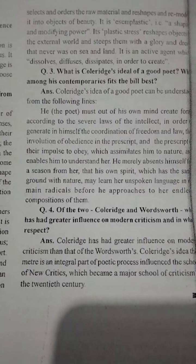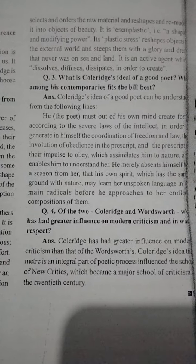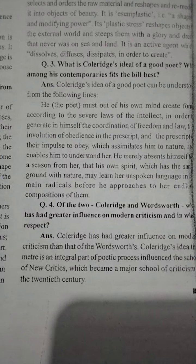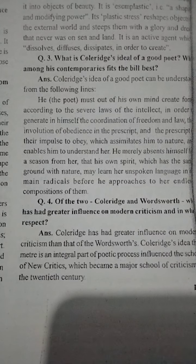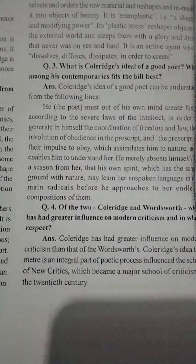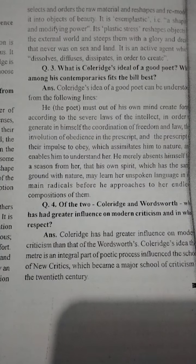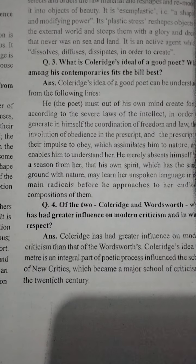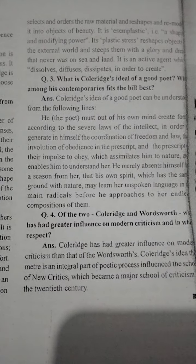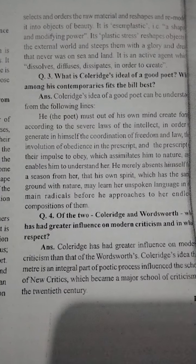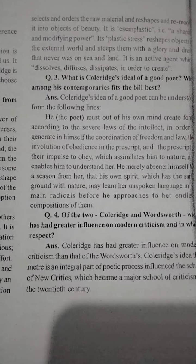Third one: what is Coleridge's idea of a good poet, and who among his contemporaries fits the bill best? Coleridge's idea of a good poet can be understood from the following lines: the poet must act according to the severe laws of the intellect in order to generate in himself the coordination of freedom and law, the involution of obedience — the impulse to obey — which assimilates him to nature and enables him to understand her. He merely absents himself a season from her, and his own spirit, which shares the same ground with nature, may learn her unspoken language in its main radicals before he approaches her endless compositions of them.